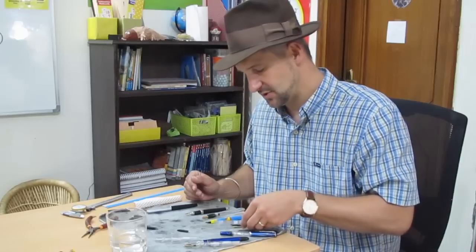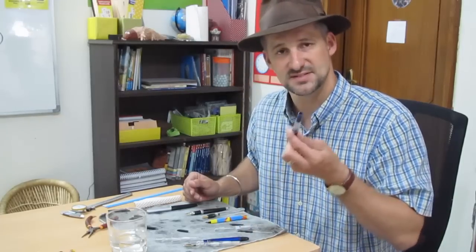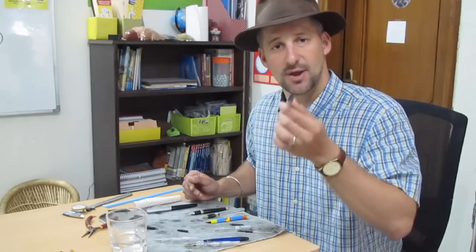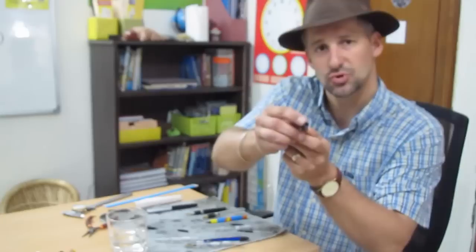Okay, so you need to know what size nib and feed you need. The next thing you need to know is if there is a certain way in the section that the nib and the feed seat. In this airmail pen, 67T, there is a groove in the section.